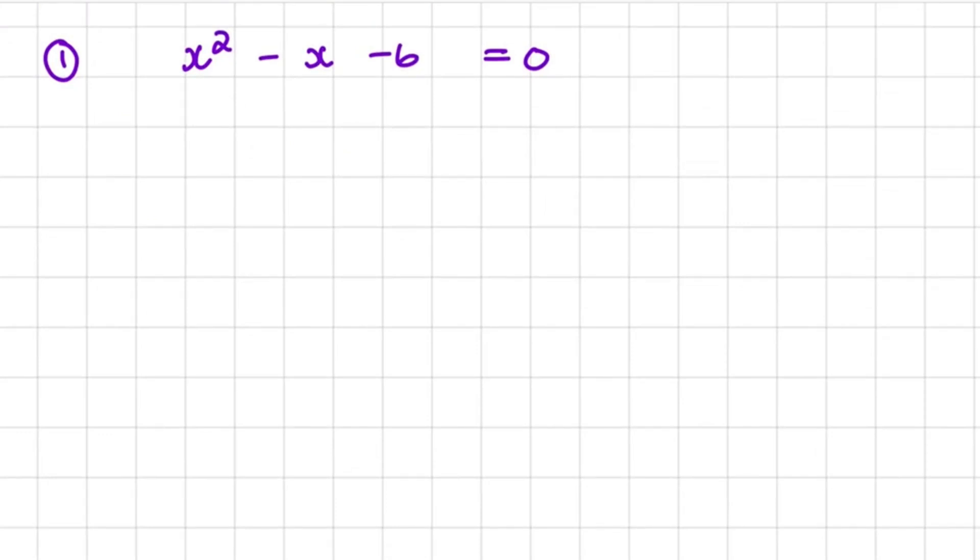Here we have x² - x - 6 = 0. This is already in standard form. We can apply trinomial factorization, and there are various methods you would have learned in grade 9.